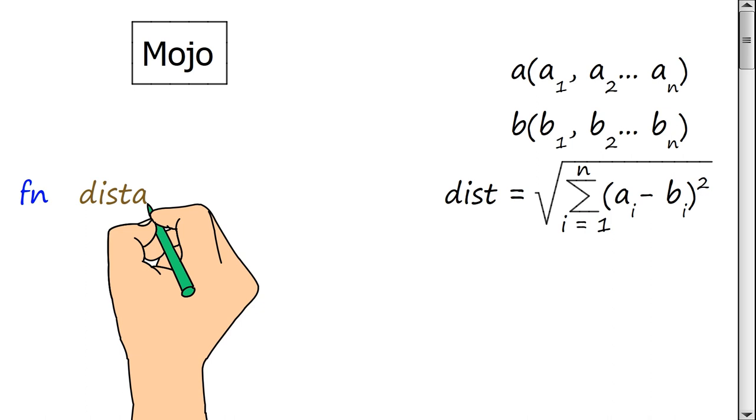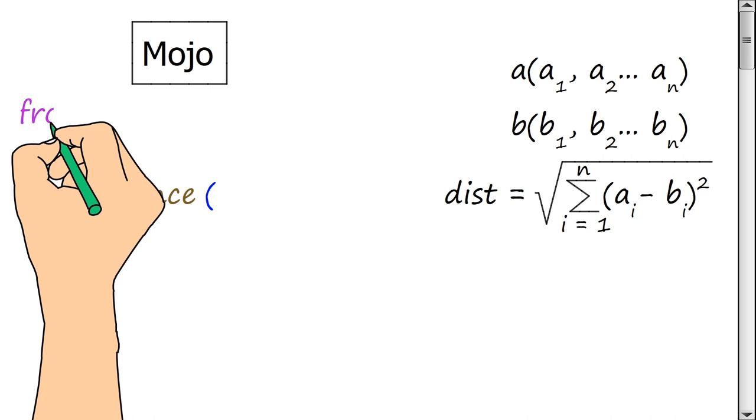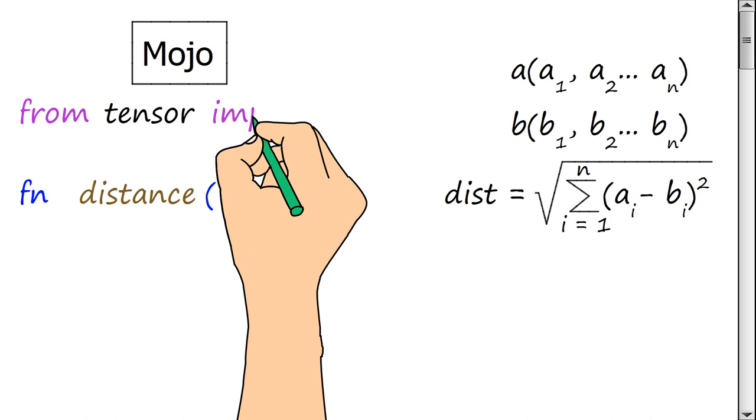So, we need a function that calculates the distance between two points. Let's call our function distance. To denote the input arguments of the function, we use the tensor library.